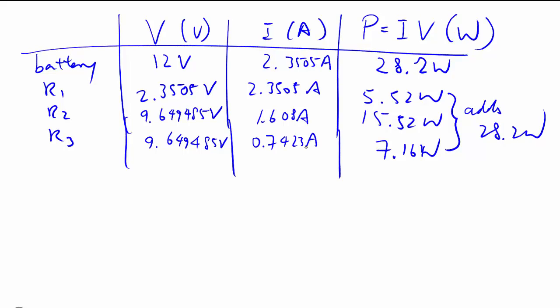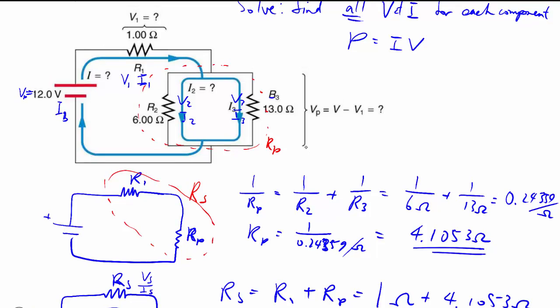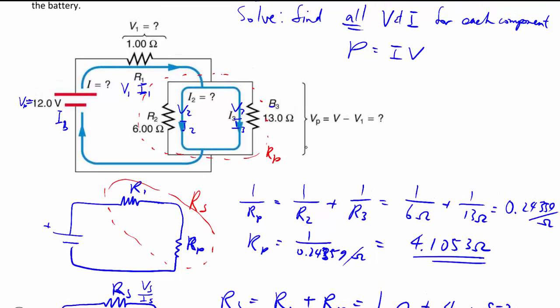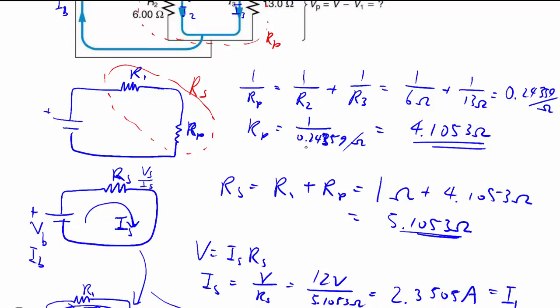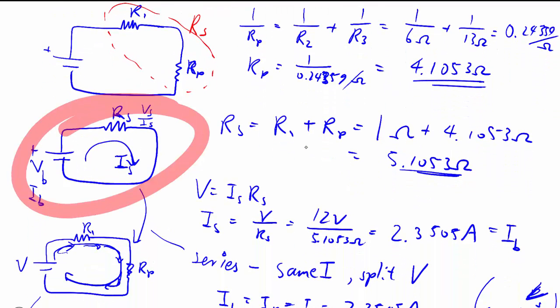And just to summarize, whenever we are given a complicated circuit like the one we're given here, and we're told to solve for it, given all the resistance and the one battery, what we do is we simplify the circuit bit by bit, be it parallel or series, and reduce it slowly down to a very simple circuit with only one resistor left.